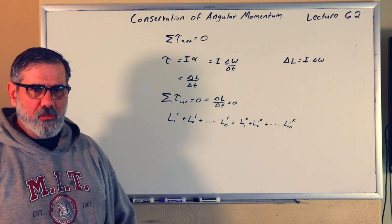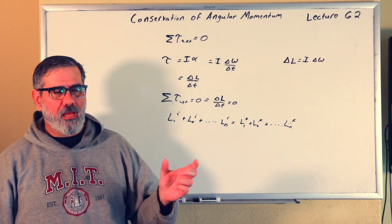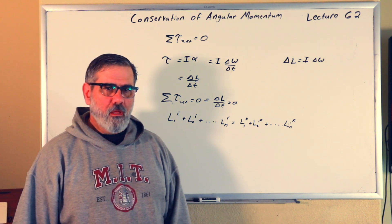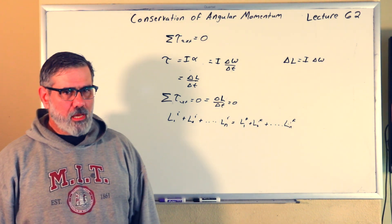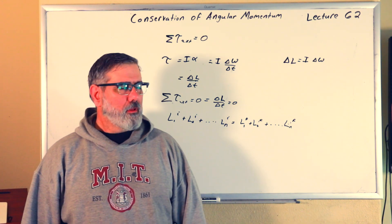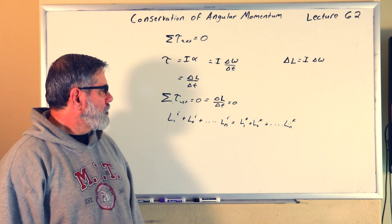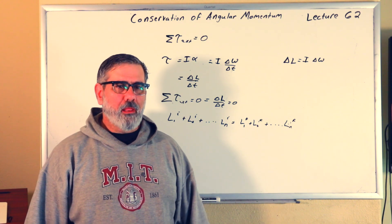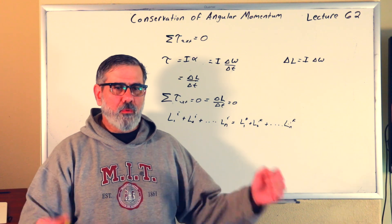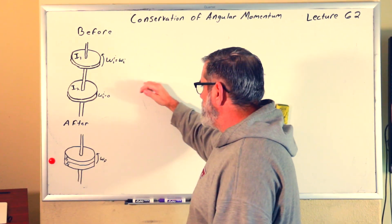Now I want to consider a very specific system. Before, when we did conservation of linear momentum, we considered an inelastic collision of a couple of balls — where energy was not conserved, except under relativity where everything is conserved. I want to look at an equivalent situation for angular momentum to that collision. Here's my illustration — the before picture.